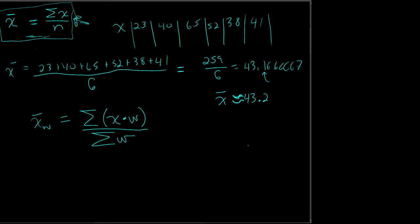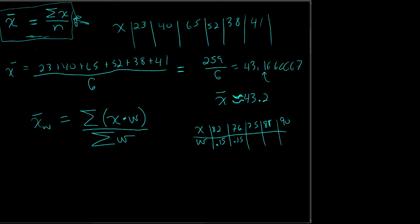For example, if you have weighted scores where certain exams are only so much of the grade and a final is more of the grade, the exam score and the weight look like this. An 82, a 76, a 75, an 81, and a 90. This is worth 15% or 0.15, this is worth 15%, this is worth 15%, this is worth 15%, and this final one is worth 40%.